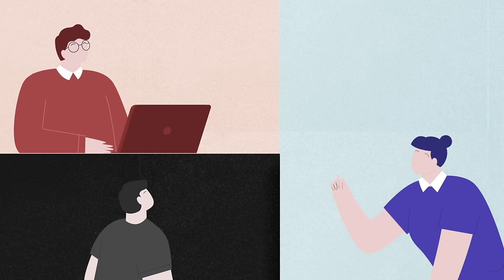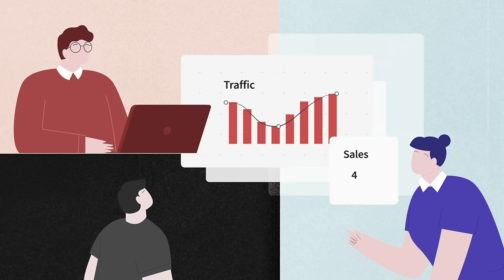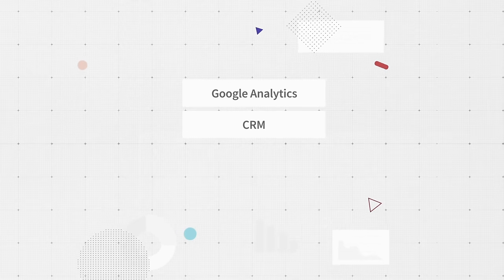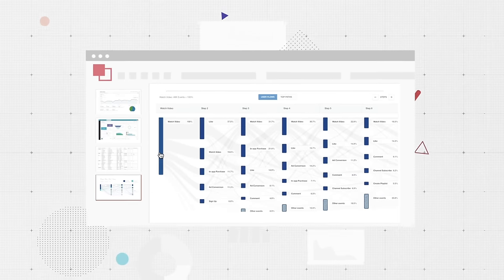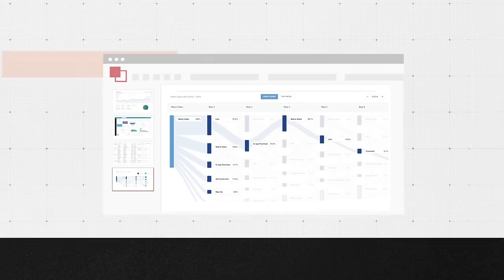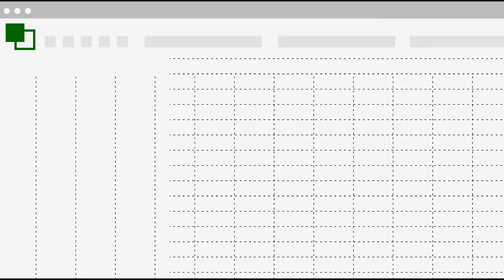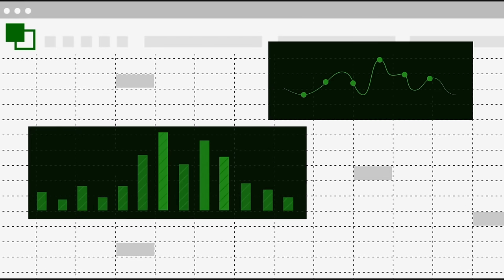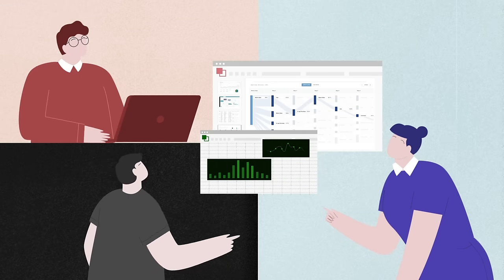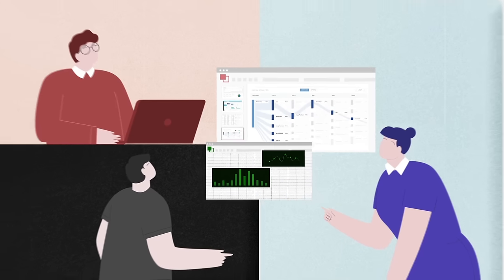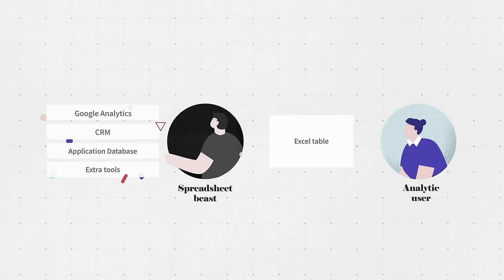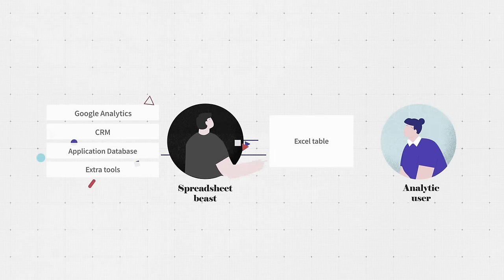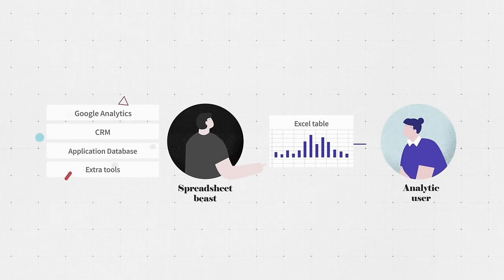Imagine a team with an application. The application works fine, traffic grows, and sales are selling. They track results in Google Analytics, the CRM, an application database, maybe a couple of extra tools they bought to spice up quarterly PowerPoint. And of course there's this one quiet guy who's the absolute beast of Excel spreadsheets. At this point their analytics data pipeline looks like this: several sources of data and a lot of boring manual work to move this data into an Excel spreadsheet. This gets old pretty fast.